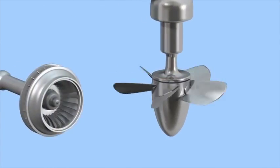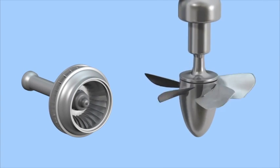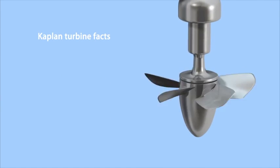The Kaplan turbine was an evolution of the Francis turbine. It was invented by the Austrian professor, Victor Kaplan, in 1913. Kaplan turbines achieve efficiencies of about 95%.